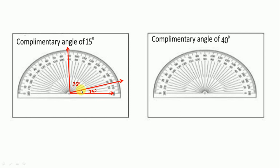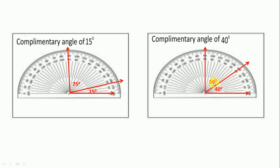The complementary angle of 15 degrees is 75 degrees. Next is 40 degrees — first we draw 0 degree line, then 90 degrees, and we draw 40 degrees. This is the 40 degree angle and its complementary angle is the remaining part: 10, 20, 30, 40 — that is 50 degrees. So 50 plus 40 equals 90.